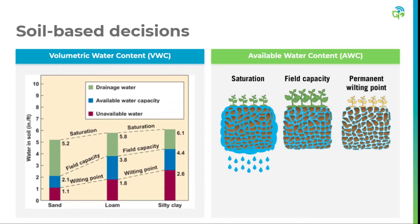At Semios, we've converted our soil moisture probe data from volumetric water content into available water content based on the principles of saturation, field capacity, and permanent wilting point. We've developed an algorithm to detect field capacity rather than use a generic calibration procedure to estimate volumetric water content. Ultimately, what we provide the grower with is available water content — a normalized value between 0 and 100% — because what we truly care about is what is available to the plant.